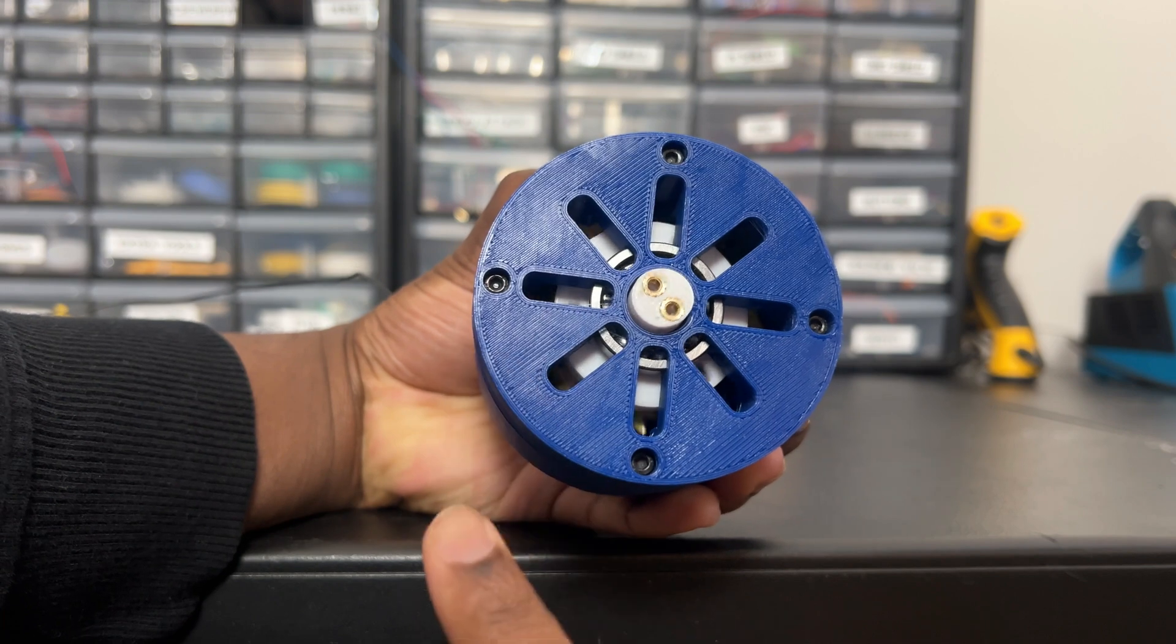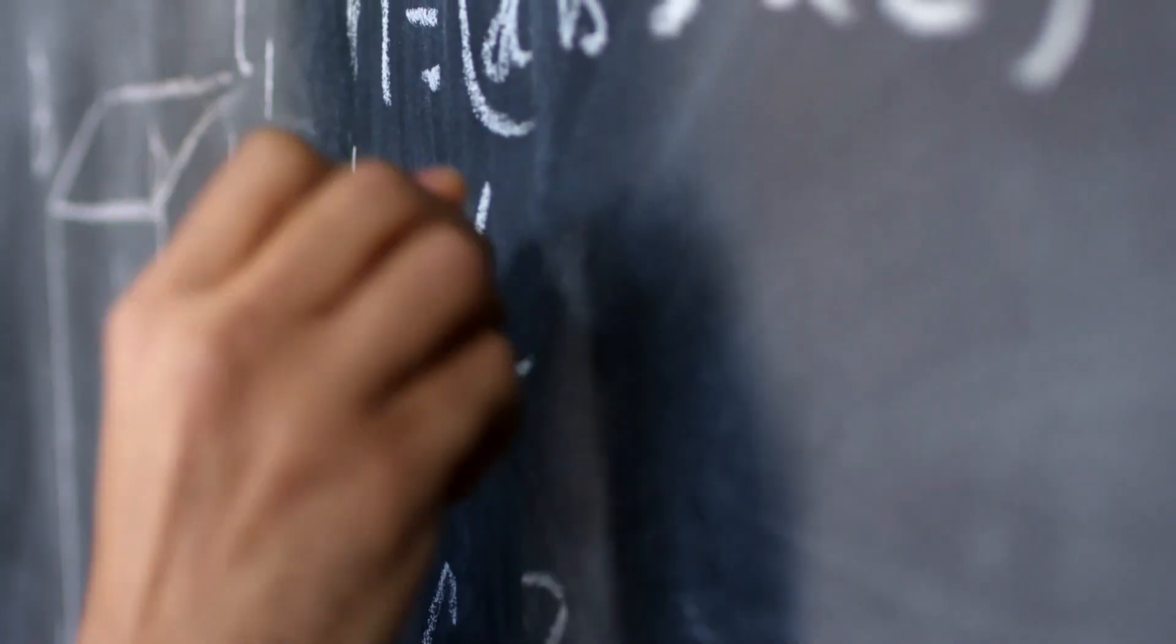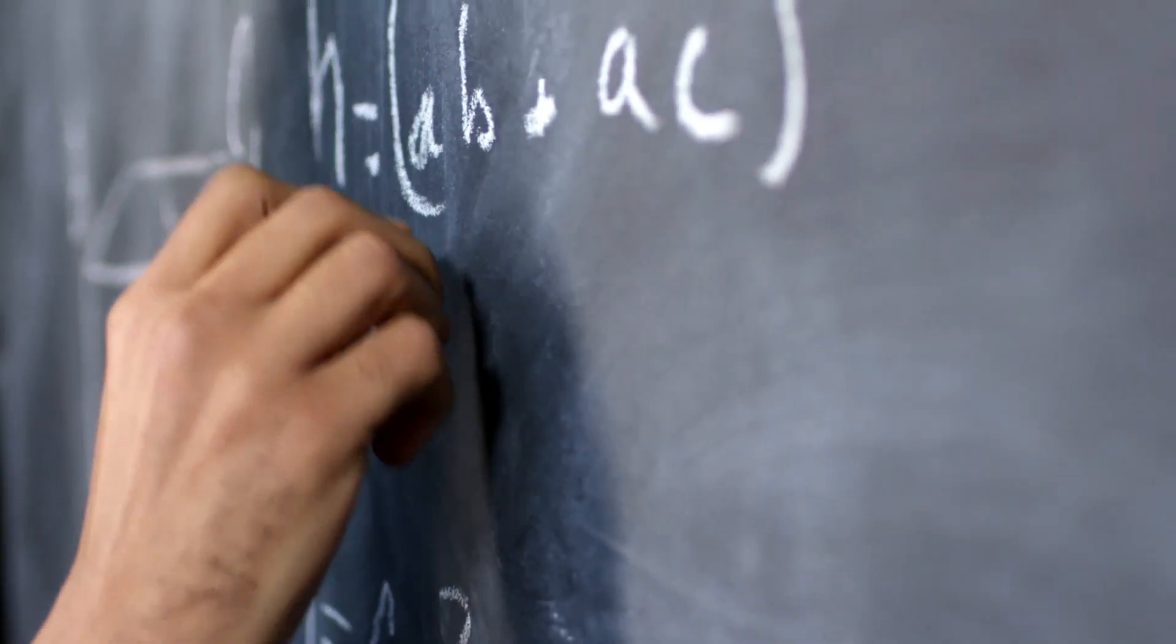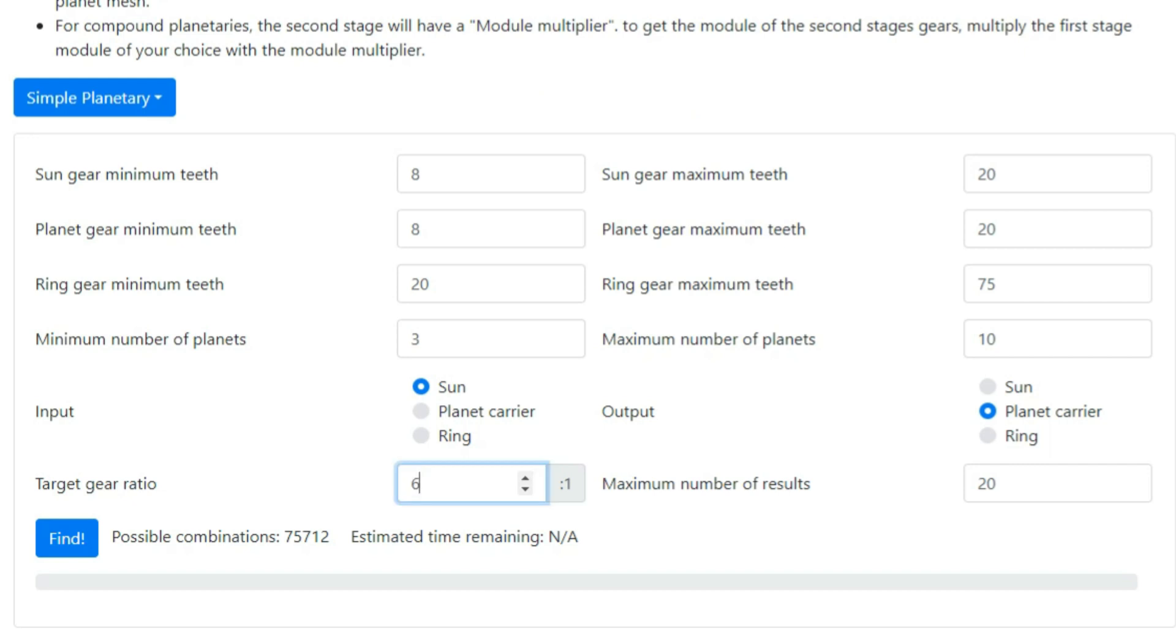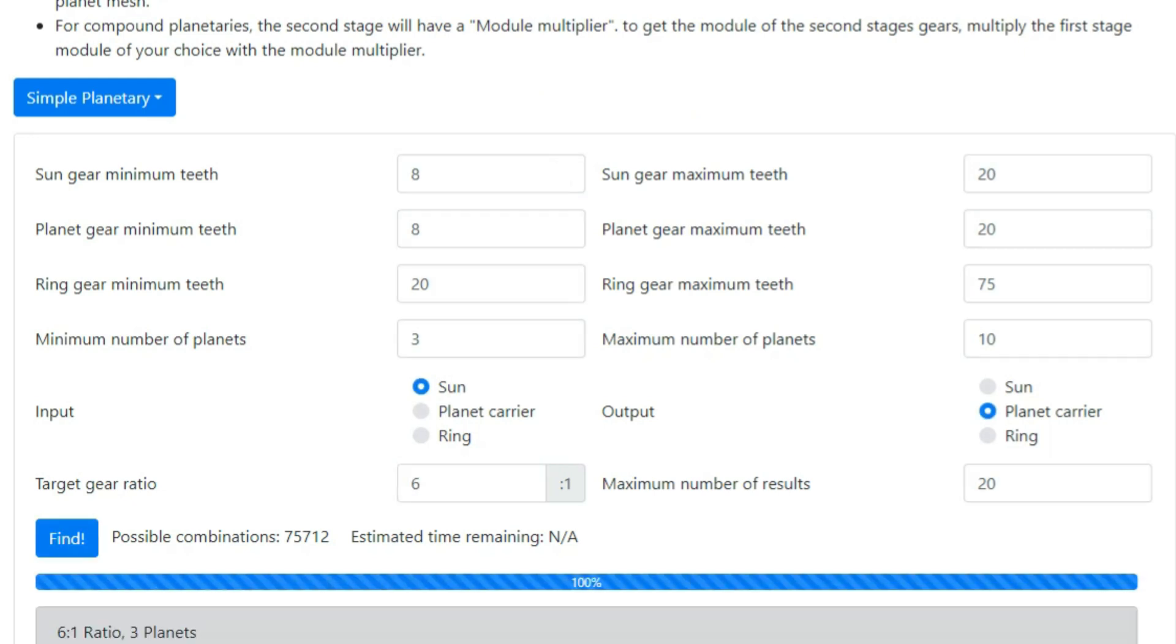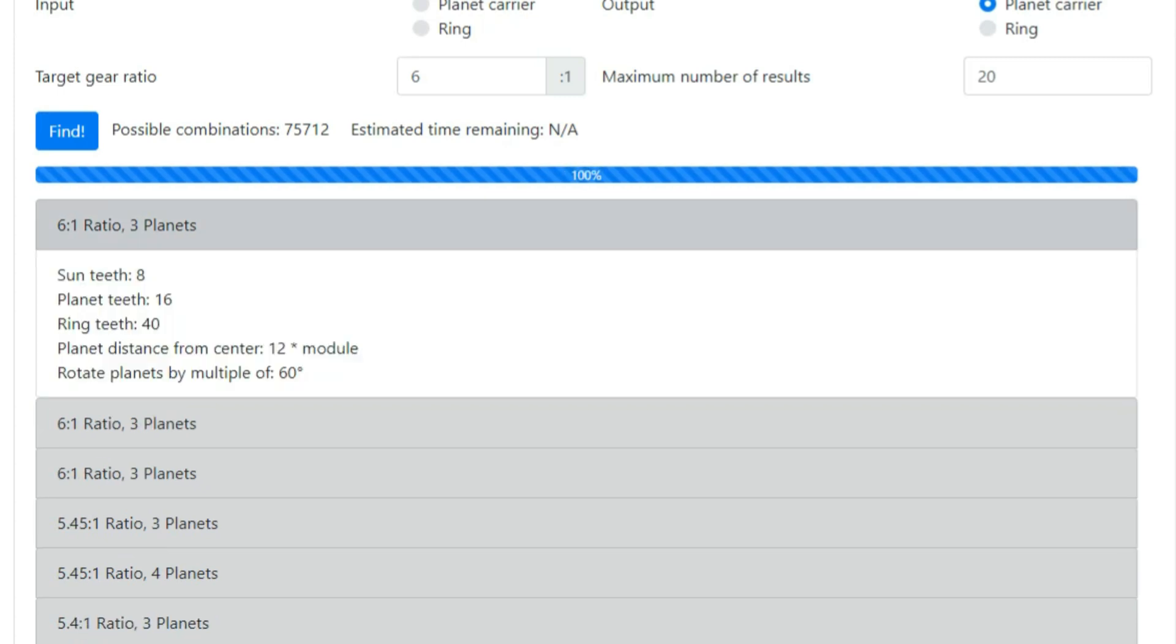An easy way to find the gear sizes for the ratio that you're looking for without all the complicated math is just using an online generator. The one that I use is planetarygenerator.com and it gives you five important measurements once you have your gear ratio.